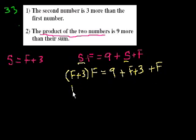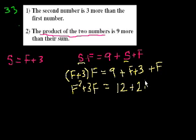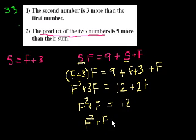See if we can simplify this. F times F is F squared plus 3F is equal to 9 plus 3 is 12 plus 2F. Let's see. Subtract 2F from both sides. You get F squared plus F is equal to 12. Subtract 12. You get F squared plus F minus 12 is equal to 0.